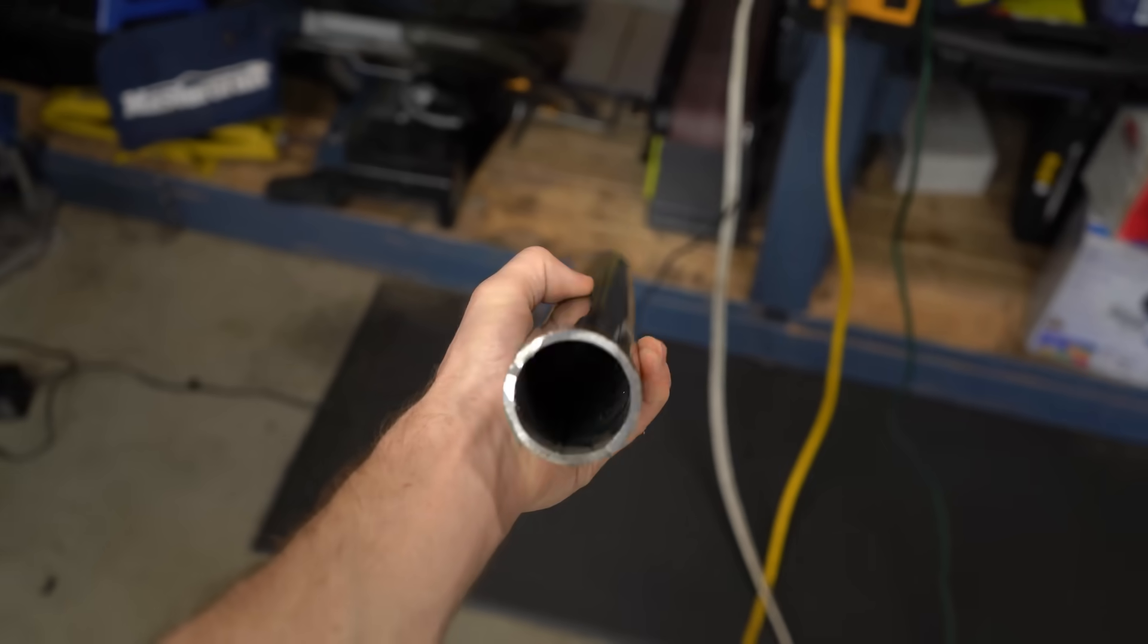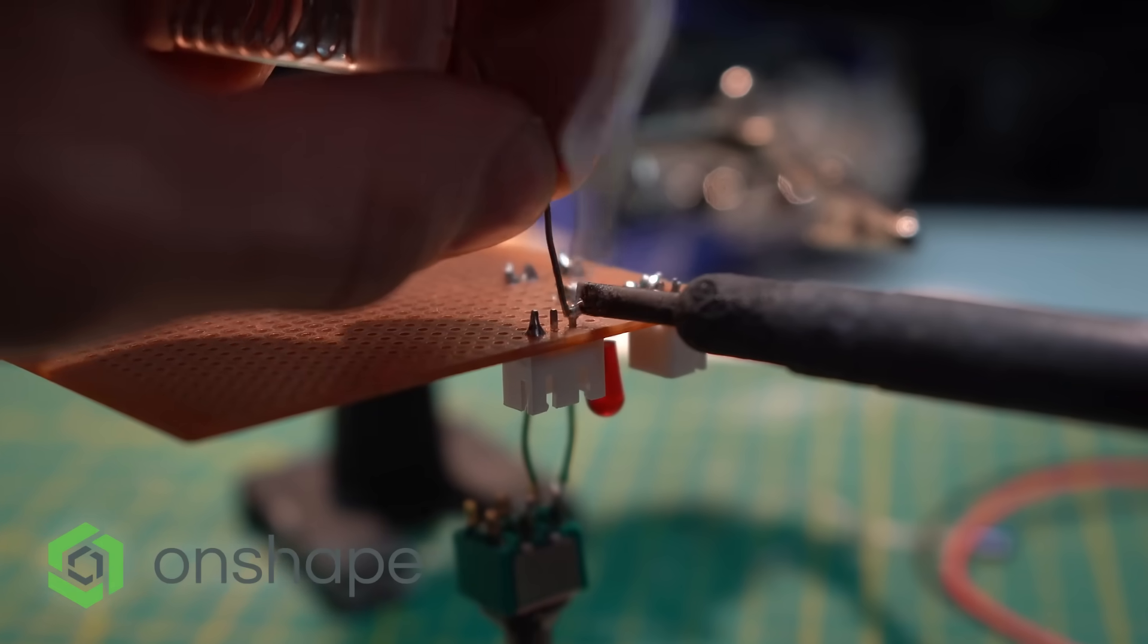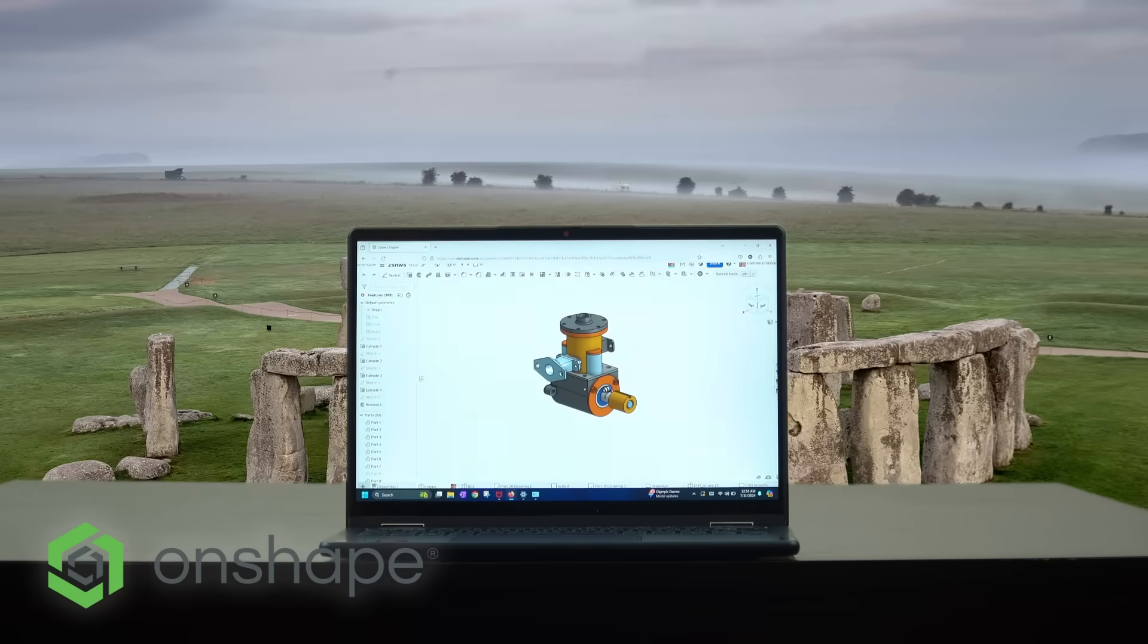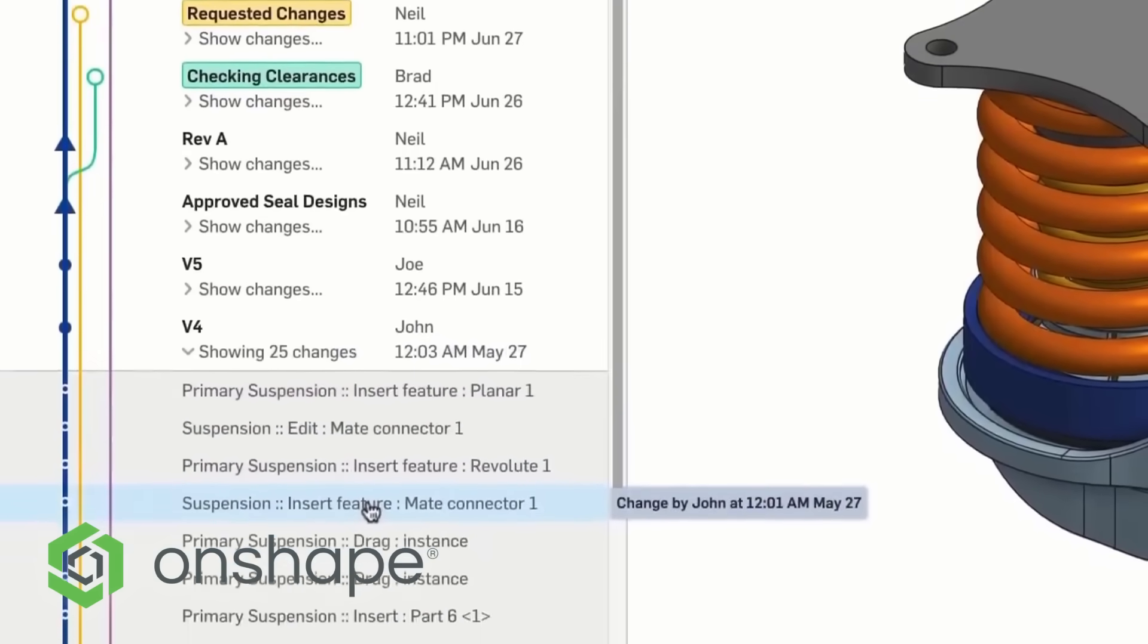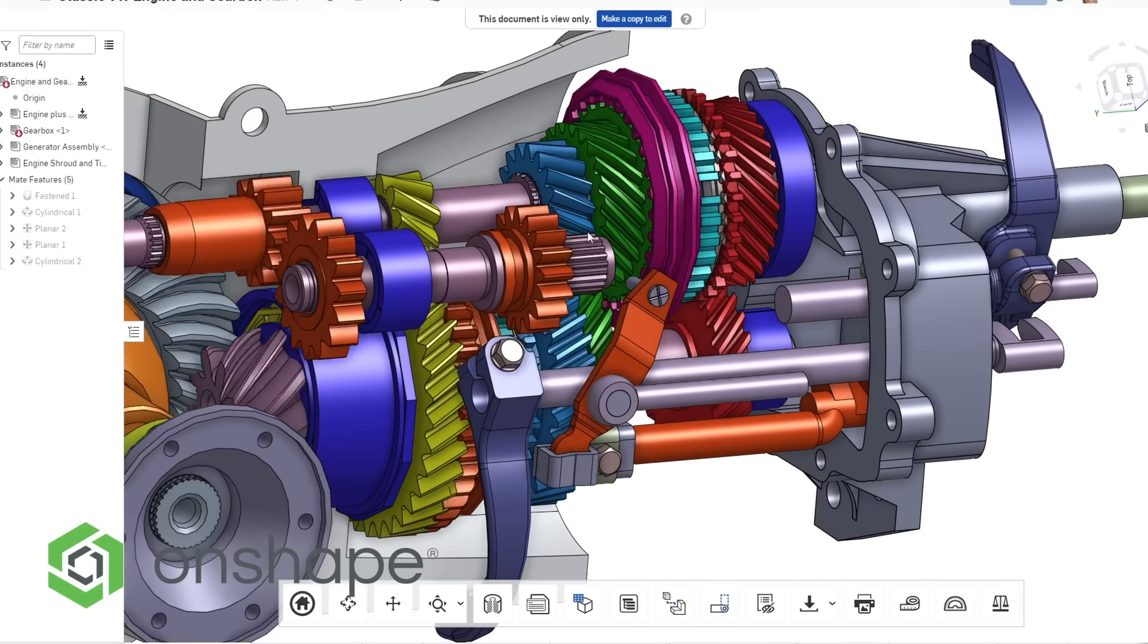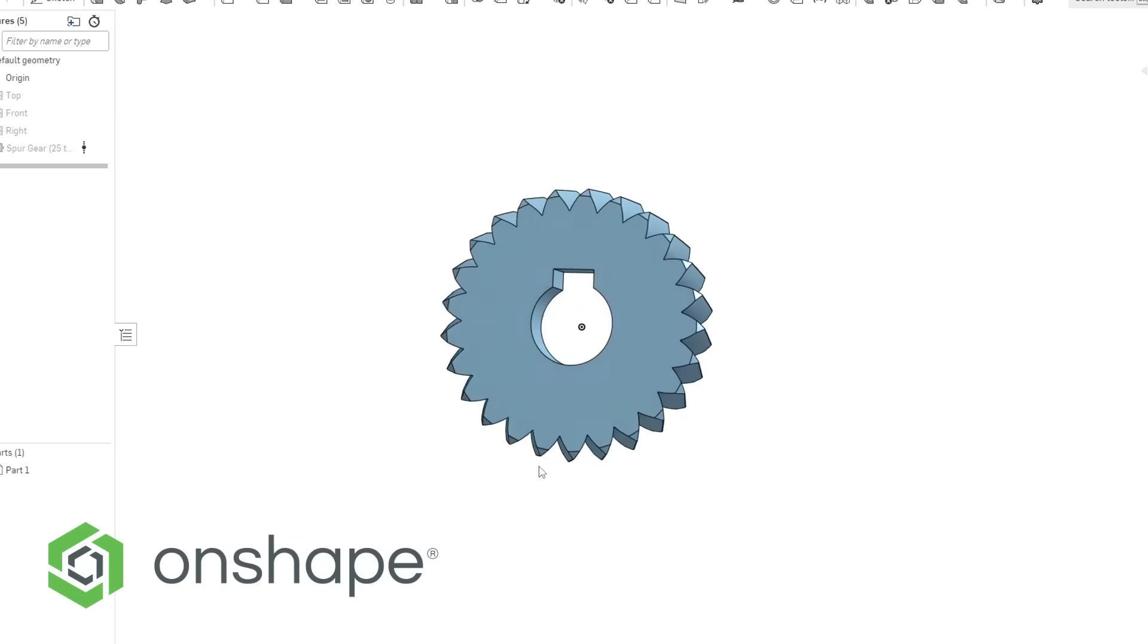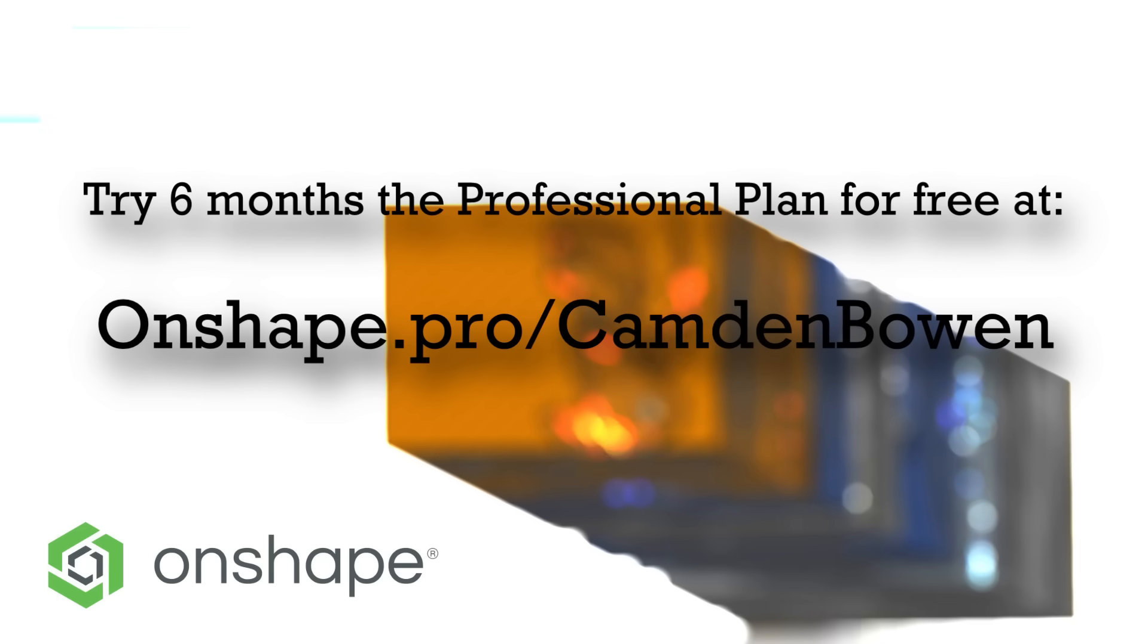So, next I'm gonna make the cylinder. But first, I want to tell you about Onshape, the free web-based CAD software. Whether you're a hobbyist or a professional in the industry, Onshape's cloud-based architecture is a perfect solution, as I can be working on a project here, and then later pick it up again from anywhere around the world. Onshape is now offering up to six months of the professional subscription, all for free, at onshape.pro slash camdenbowen.